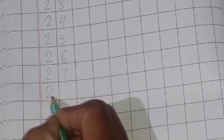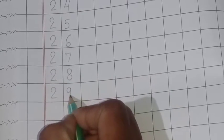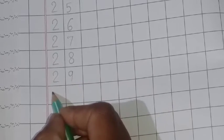2, 6, 26. 2, 7, 27. 2, 8, 28. 2, 9, 29, and 30, 30.